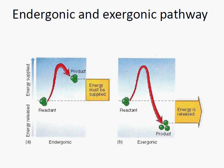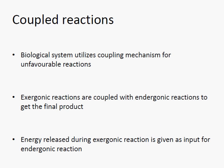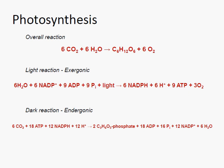In exergonic reactions, energy is released to the surroundings since the energy content of the products is less than that of the reactants; it is the opposite in endergonic reactions. Biological systems couple two different reactions in most metabolic pathways: an endergonic reaction, which requires energy, is coupled with an exergonic reaction, which releases energy, so the overall reaction may be a favorable one. Most biochemical reactions are unfavorable in nature.